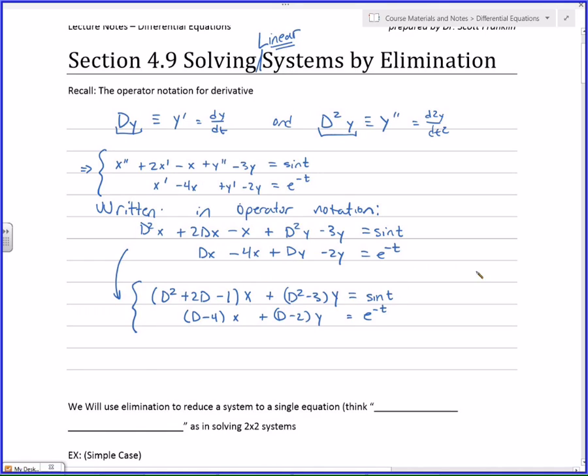Now, interestingly, I don't know if we really talked about this, but let me come off to the side over here and just mention that if I had something like d squared, let's say I had minus 2d plus 1 applied to x. Because of the linear properties of d, you can actually factor differential operators and write that as d minus 1 times d minus 1. And these two things give you the same result.